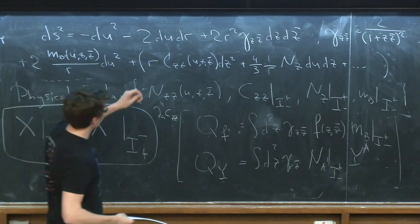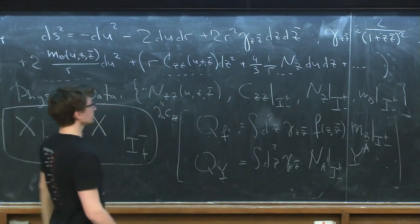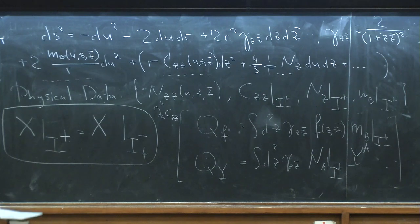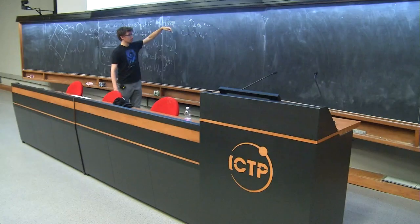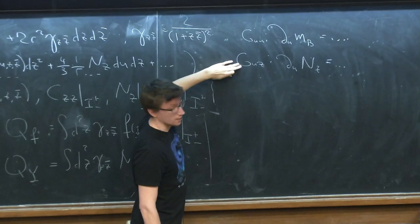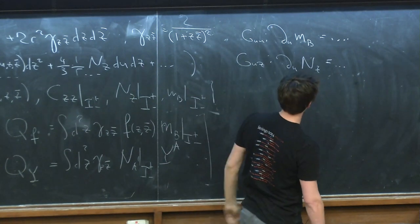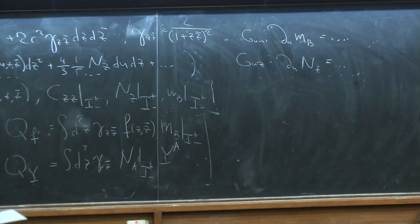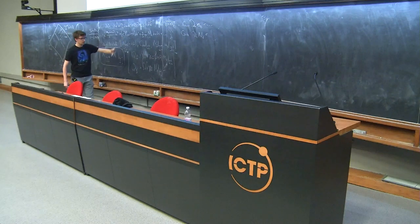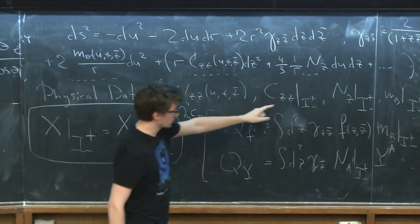We discussed the so-called angular momentum aspect. By looking at Einstein equations — say the G_{UZ} component — we found equations of this type: the first derivative of the mass aspect and angular momentum aspect are fixed up to integration constants. So we end up with the picture of the data we have to specify. Null infinity is characterized by the news tensor and these three integration constants.